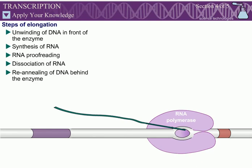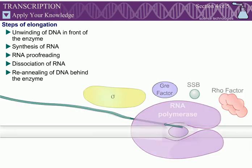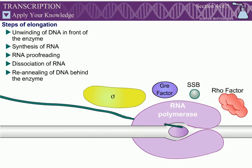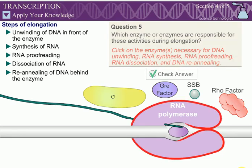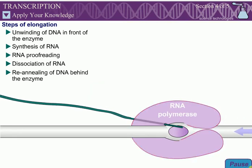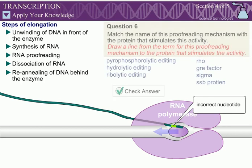Elongation: Help this bacterial cell form a functional RNA transcript. Question 5: Which enzyme or enzymes are responsible for these activities during elongation? Question 6: Match the name of this proofreading mechanism with the protein that stimulates this activity.